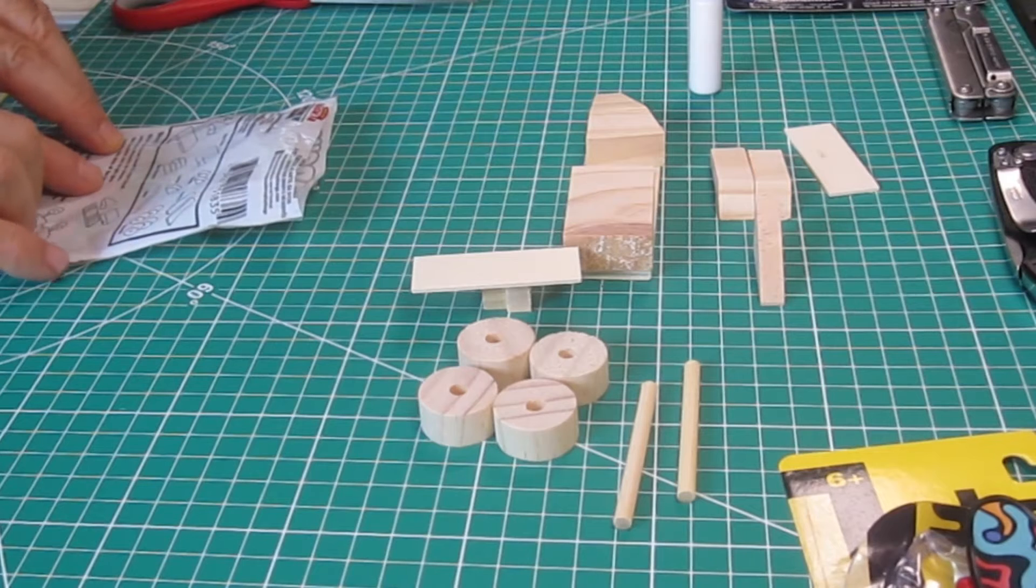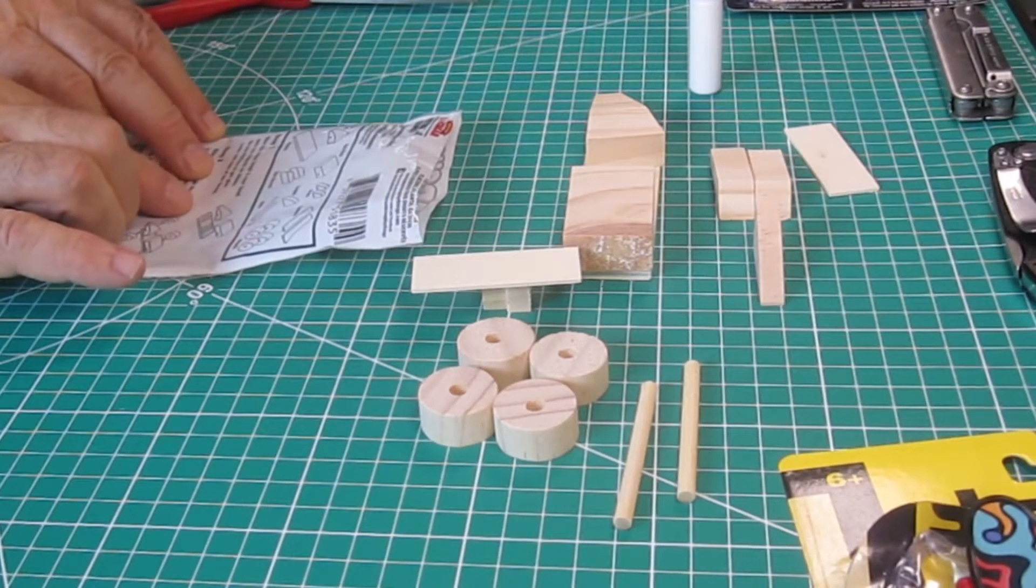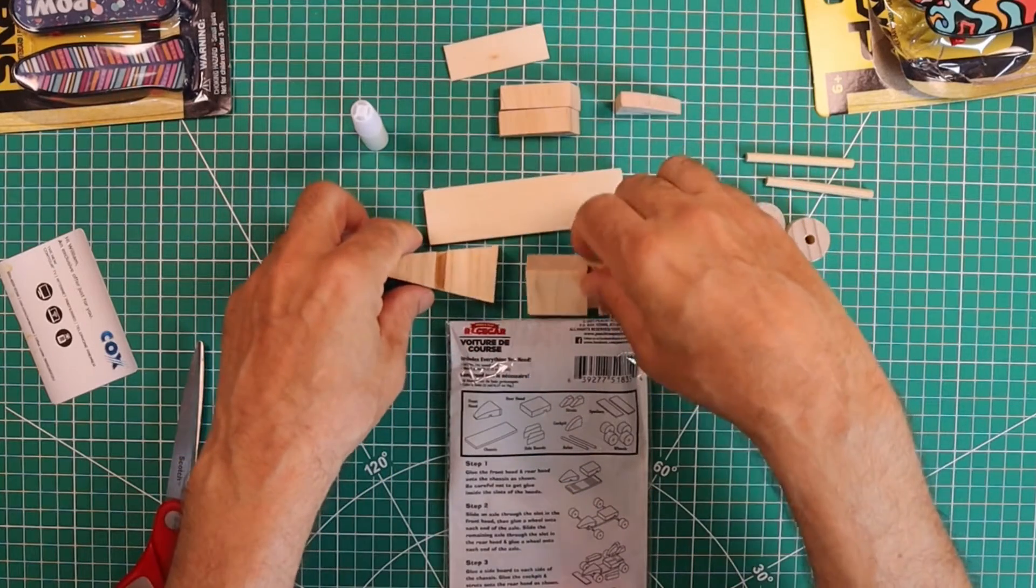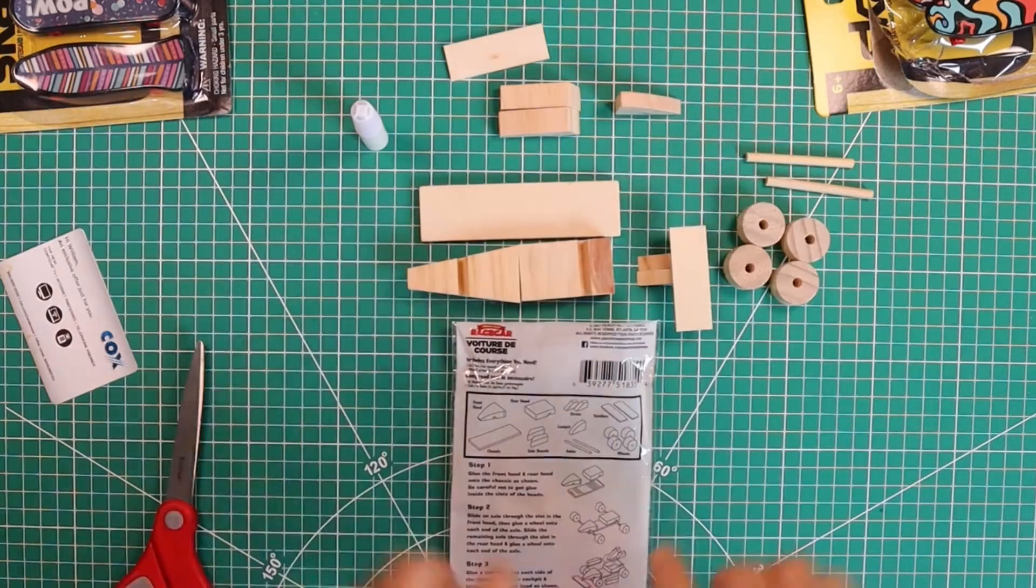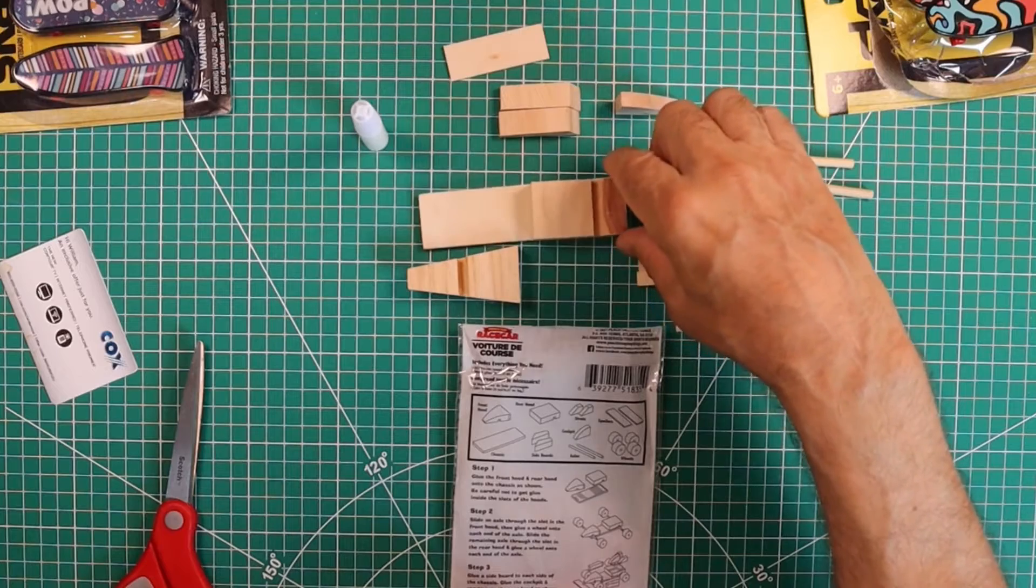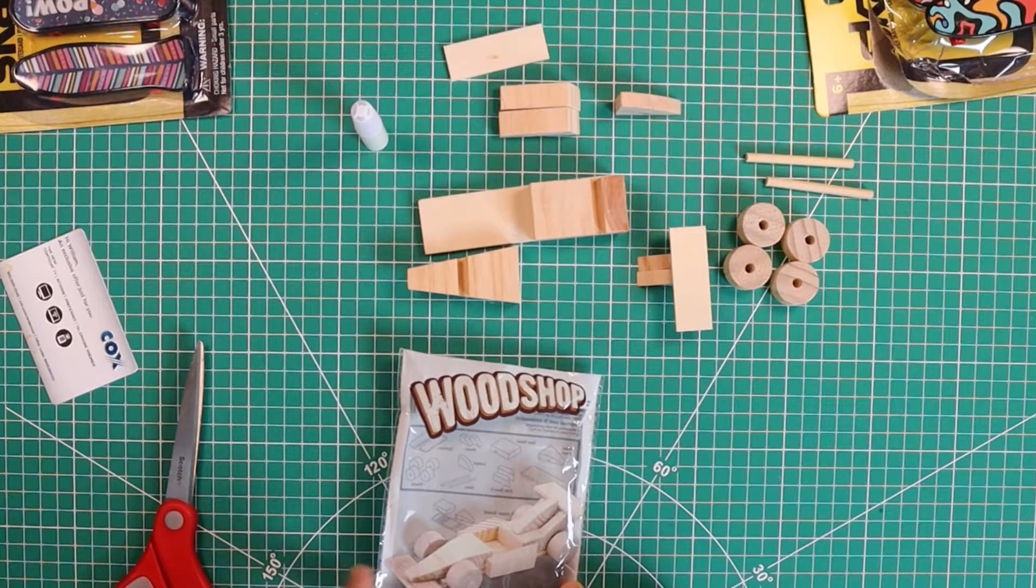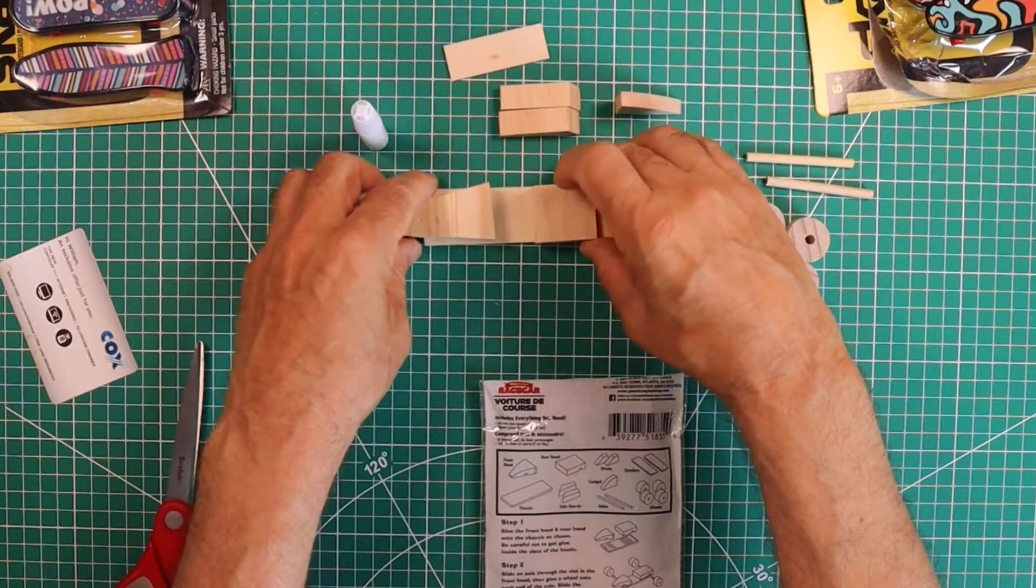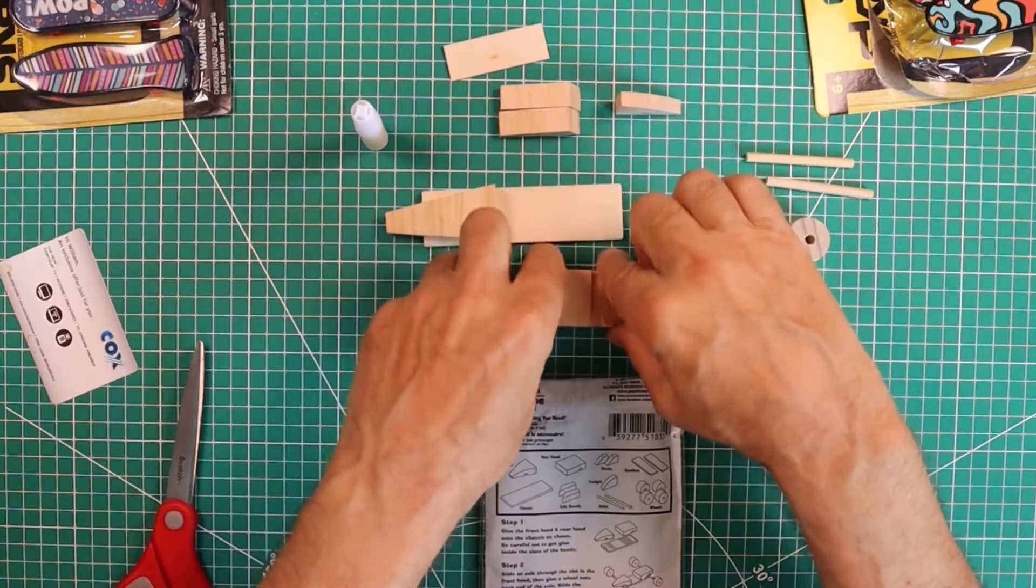Glue the front and rear hood onto the chassis as shown. Be careful not to glue inside the slots of the hoods. In other words what they're talking about is these slots right here. Now Uncle Bill has a trick on how to do that. And it looks like this one runs off the back. This one goes flush to the back I think. They don't show exactly but it does look flush. Now the other one is kind of your own call as far as how far to go back. I'm going to go about this far back and obviously I'm going to have that turned the other way.